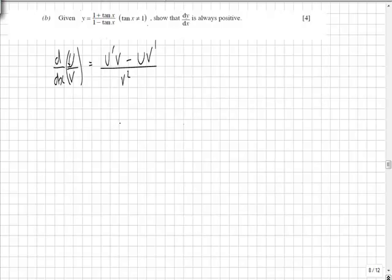So in this instance u is 1 plus tan x and v is 1 minus tan x. So working out u dash is going to be 1 plus tan x is going to be sec squared x multiplied by 1